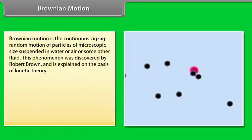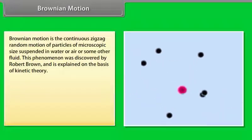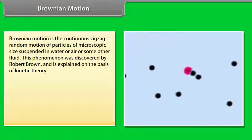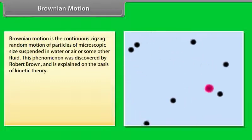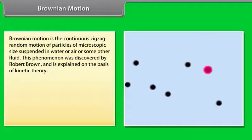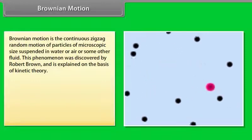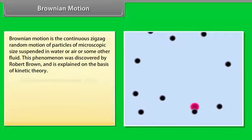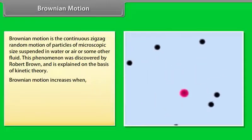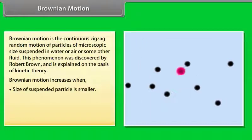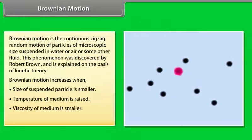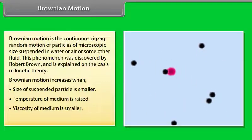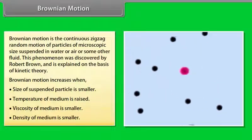Brownian motion is the continuous zigzag random motion of particles of microscopic size suspended in water or air or some other fluid. This phenomenon was discovered by Robert Brown and is explained on the basis of kinetic theory. Brownian motion increases when size of suspended particle is smaller, temperature of medium is raised, viscosity of medium is smaller, density of medium is smaller.